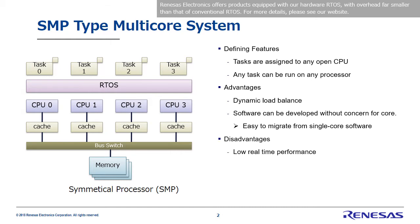On the other hand, one disadvantage is poor real-time performance. One problem is with the cache. As this figure shows, we don't know which CPU will be running task 2. So every task's execute code and data are stored in shared memory, and when the task is run, they are loaded into the cache. As a result, when the CPU tries to run a task, if the execute code and data aren't in the cache, there will be a cache miss. And if the task running on CPU 1 moves to CPU 3, a cache migration will occur, leading to a drop in real-time performance.